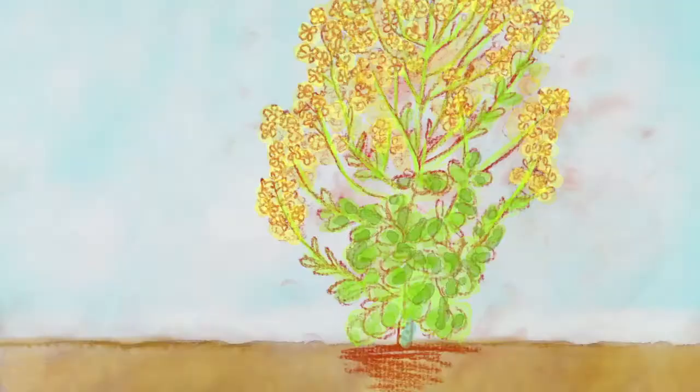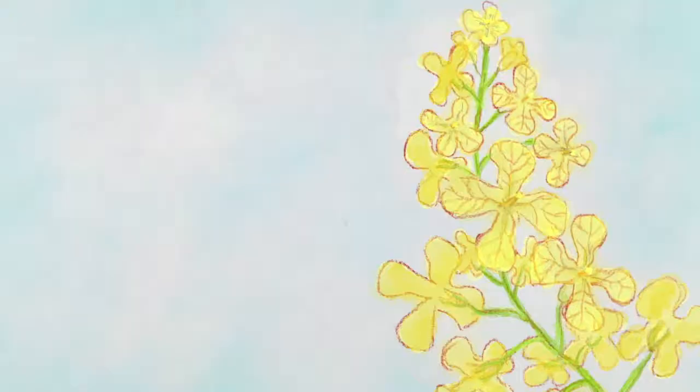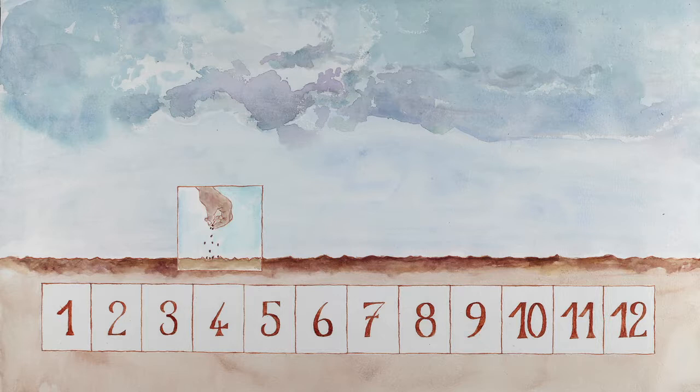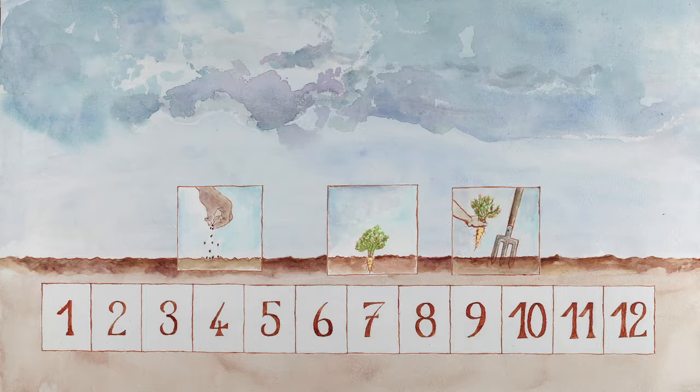Life cycle. Chard and beet plants grown for seed production are cultivated in the same way as those for consumption. They will produce seeds only in the second year.